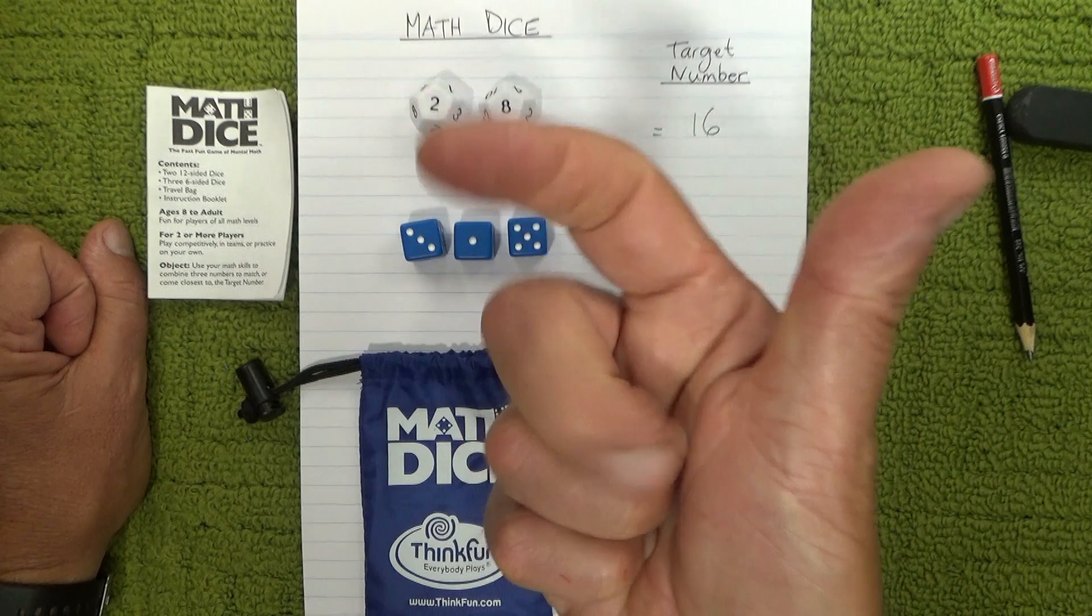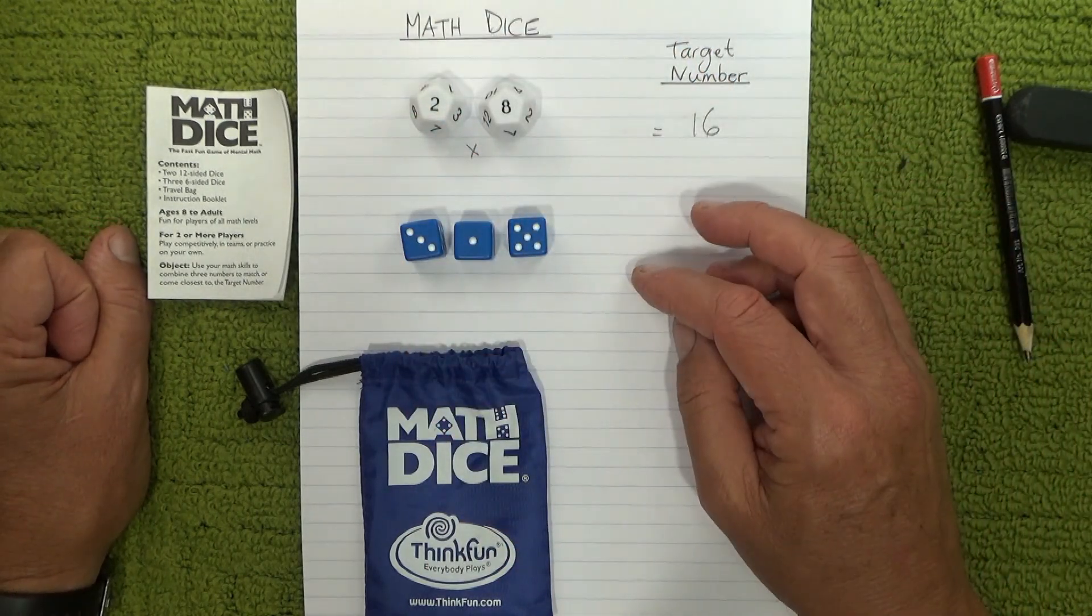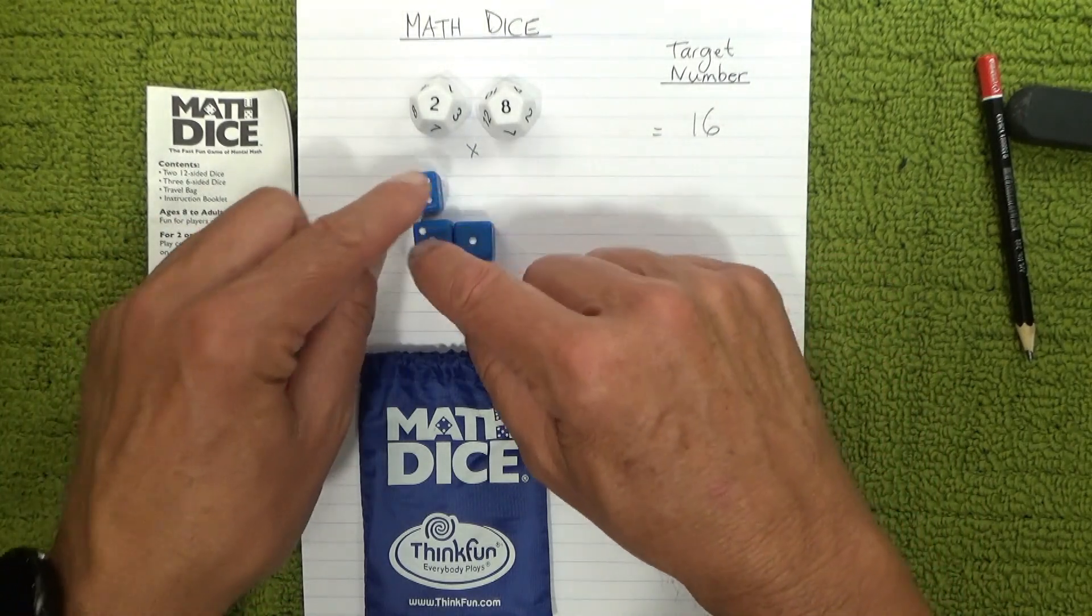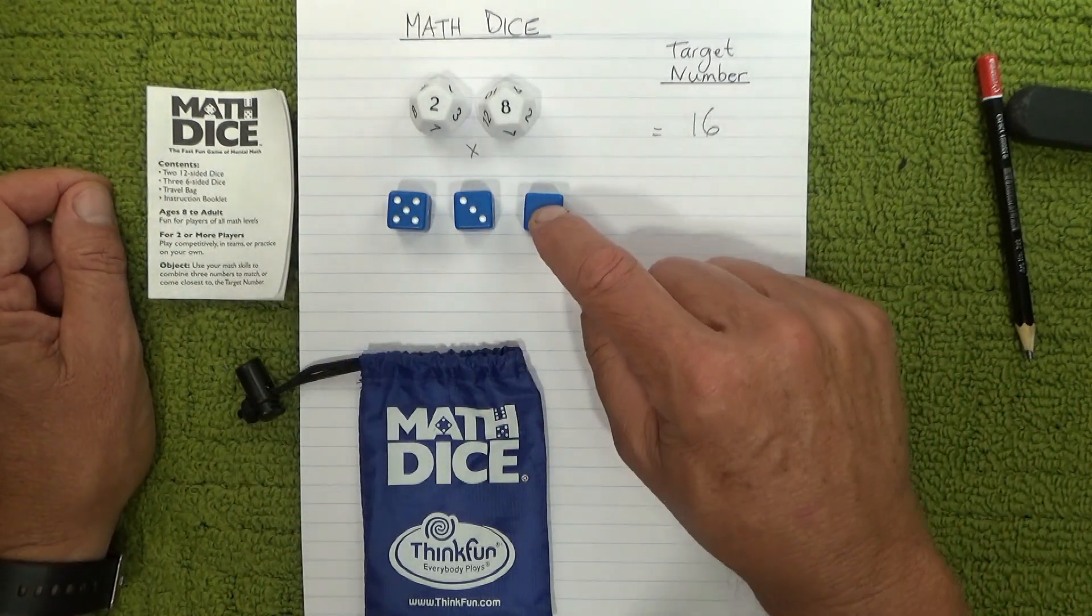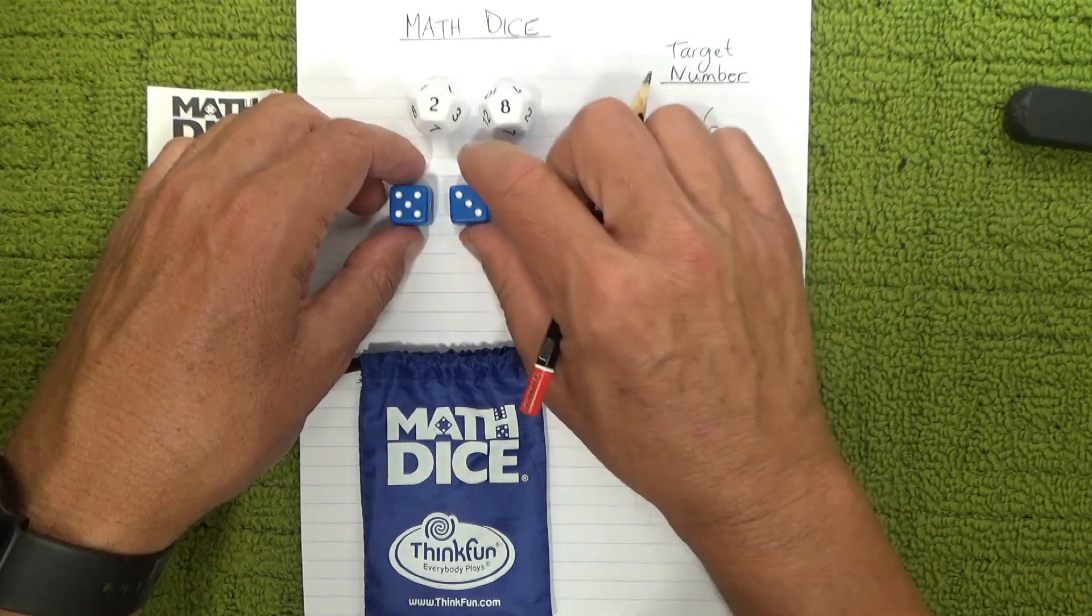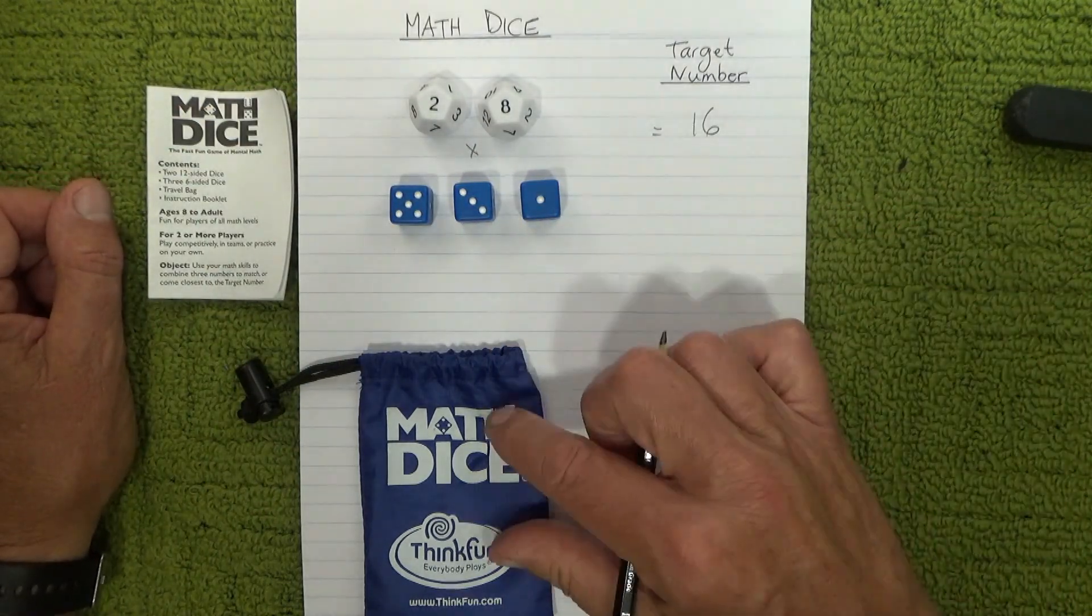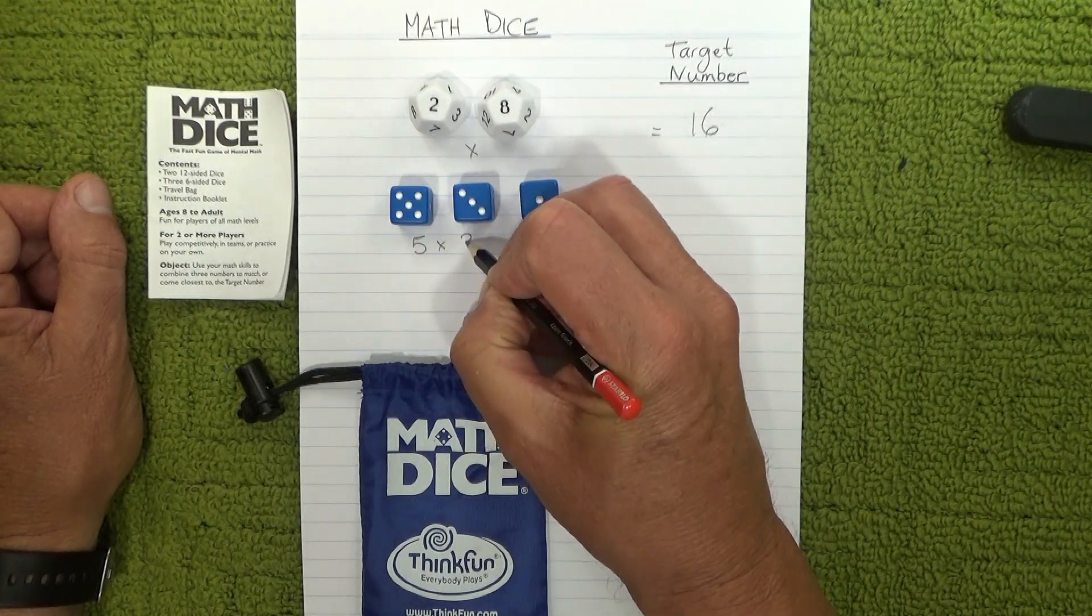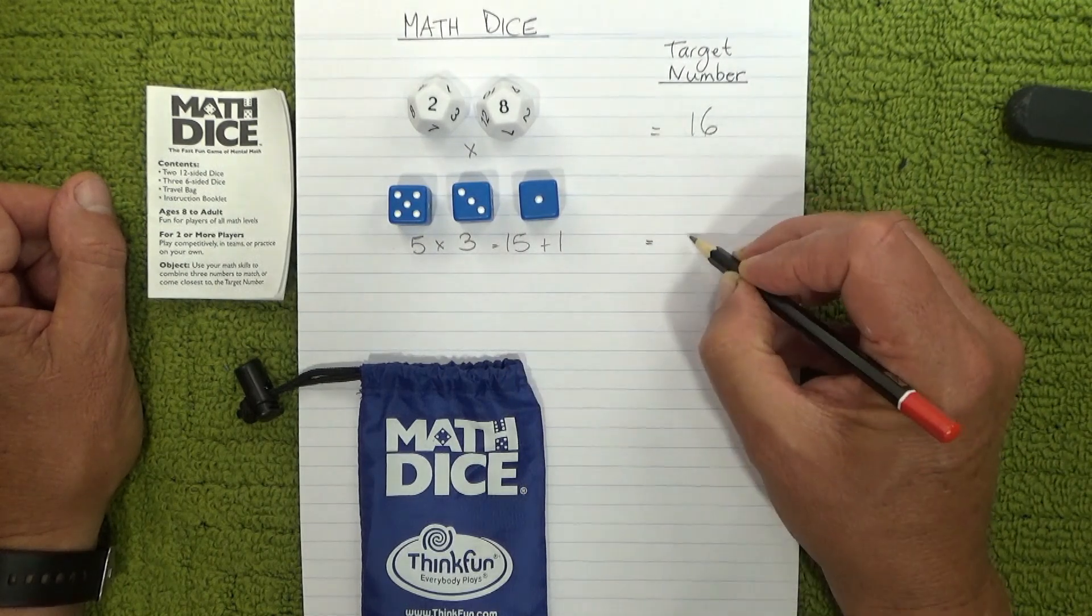You can use addition, subtraction, multiplication, division, and even the power of as well. So let's have a look, this is going to be quite an easy one: five times three is fifteen plus one equals sixteen. So the first person to call out five times three plus one equals sixteen is the winner of that round.